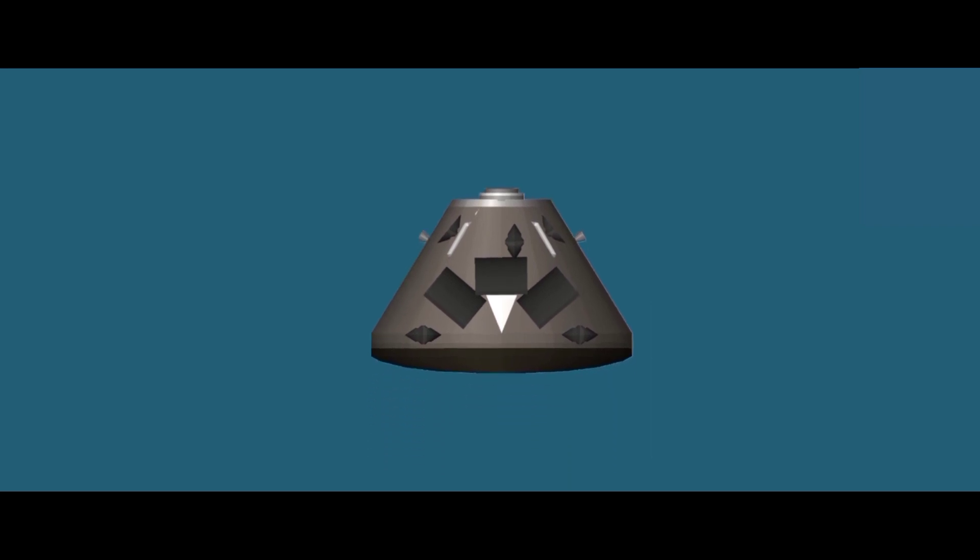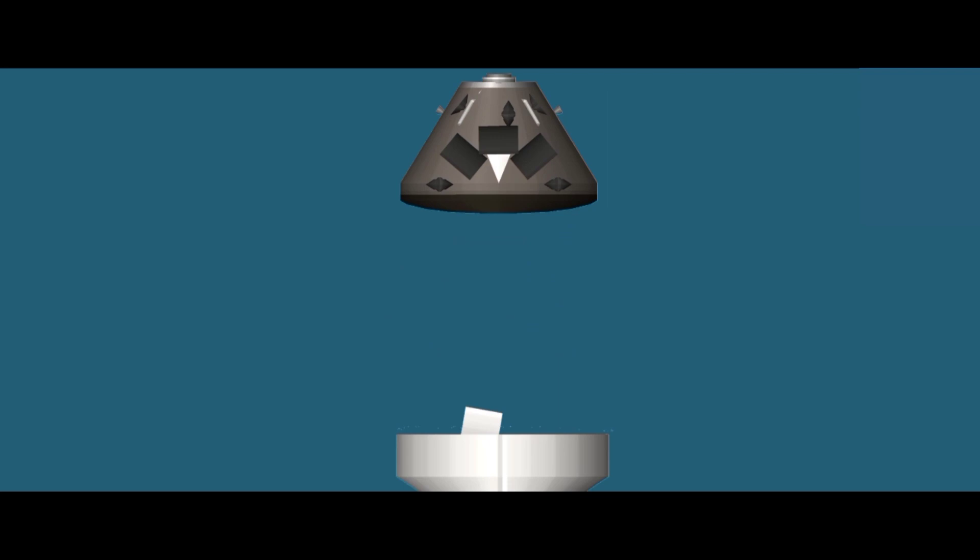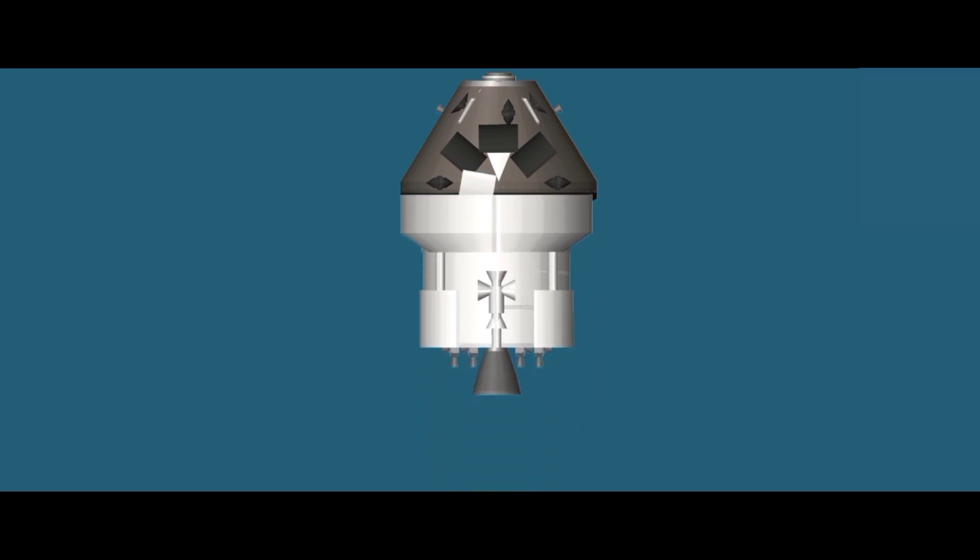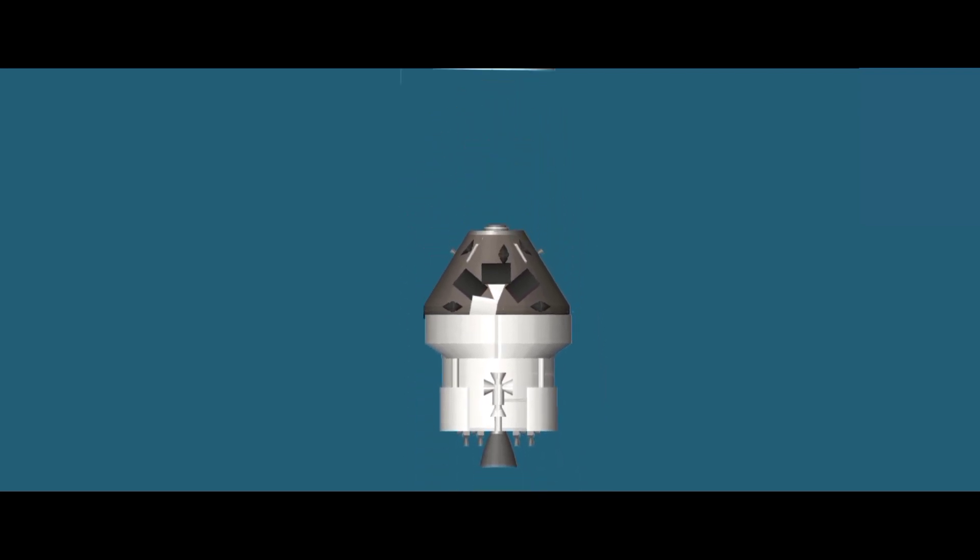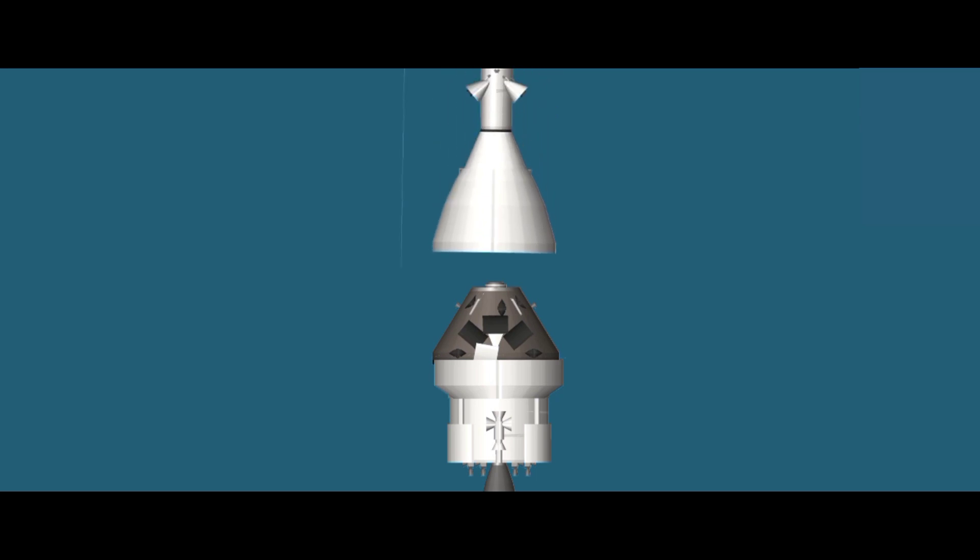The crew module, where up to four astronauts will live and work throughout the flight. The service module, with life-support systems for the crew and its own engine and fuel reserves, and a launch-abort system with engines capable of pulling the crew module to safety during launch should anything go wrong.